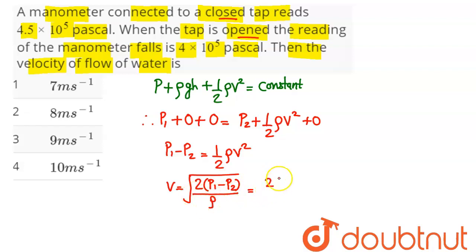So this comes out as two times pressure difference here is 4.5 × 10^5 minus 4 × 10^5 divided by density of water, which is 1000 kg per cubic meter.